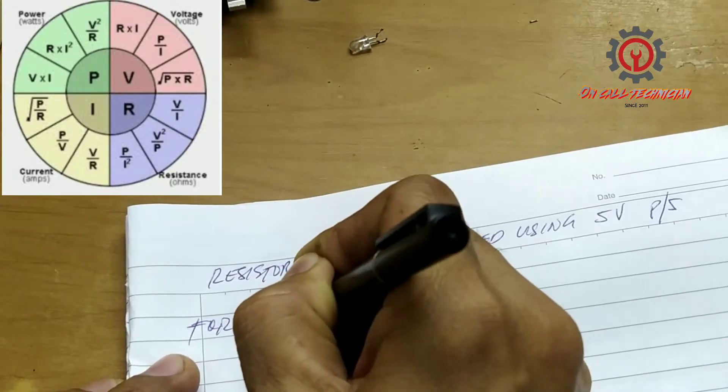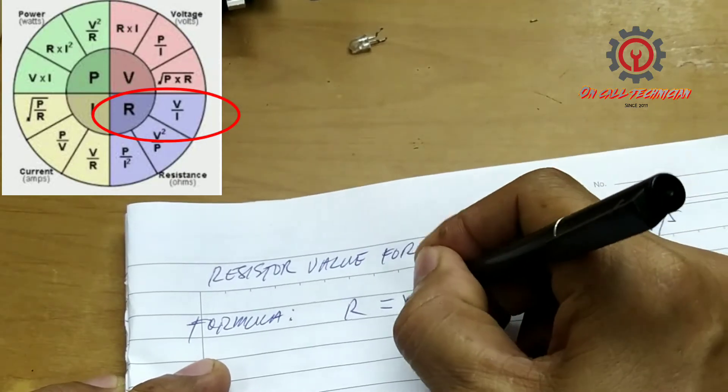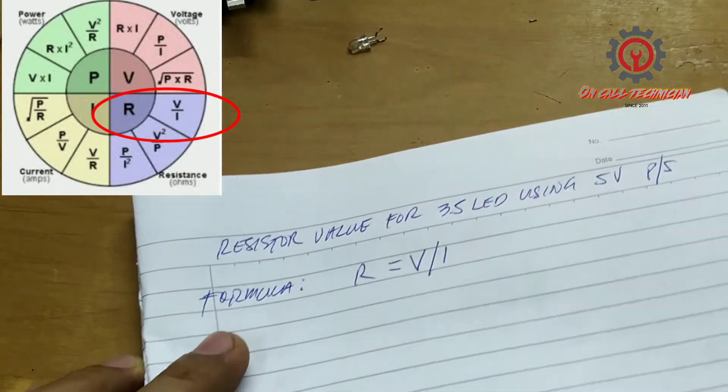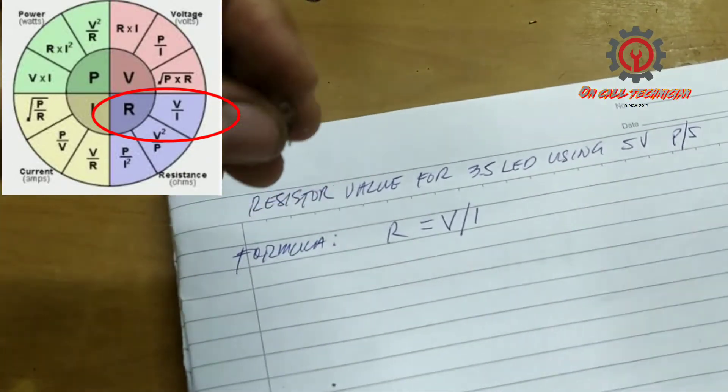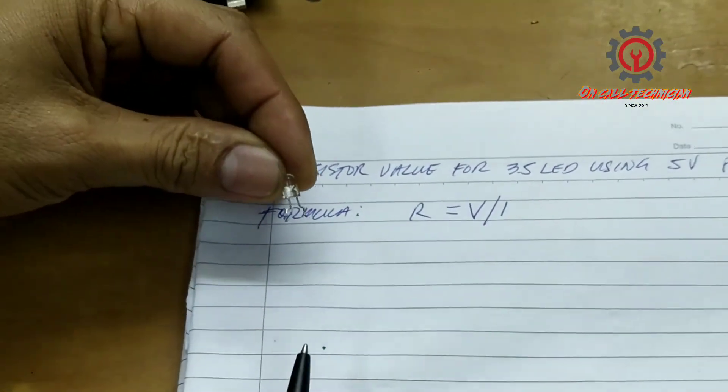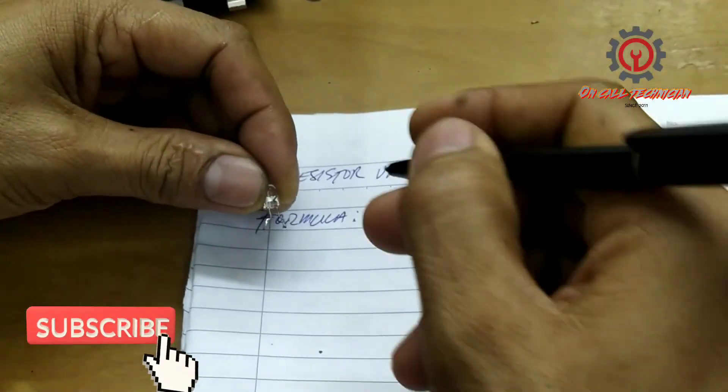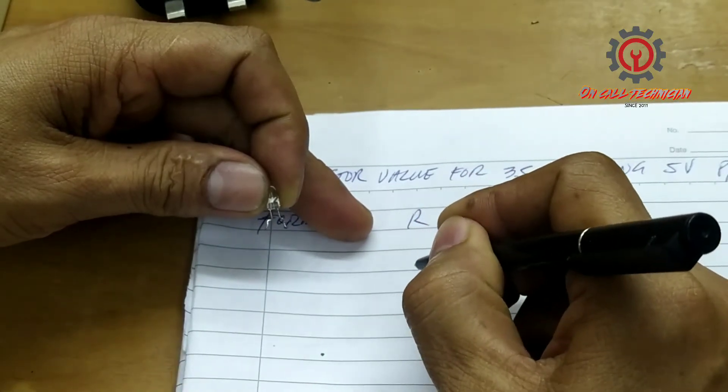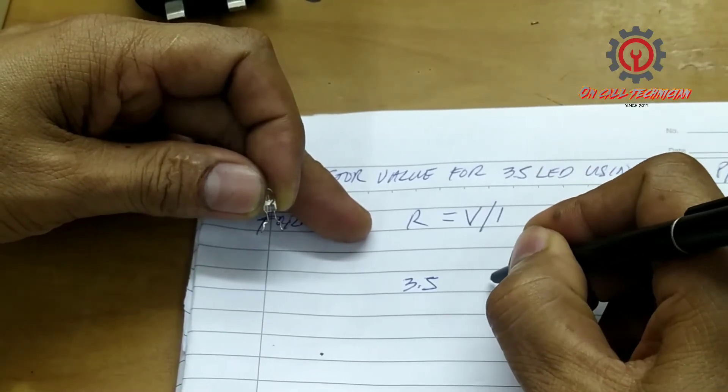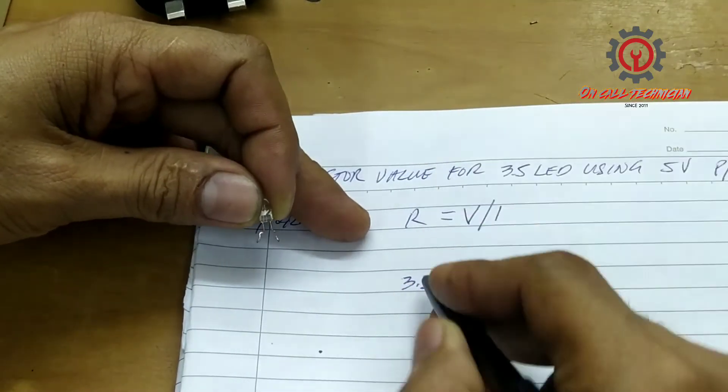The formula should be resistance is equal to volts divided by current. And as I've said a while ago, ang LED na 'to ay meron siyang 3.4 to 3.8 voltage, pero ang gagamitin natin is 3.5 at ang current niya is 25 milliamps. Okay, ito yung voltage niya.